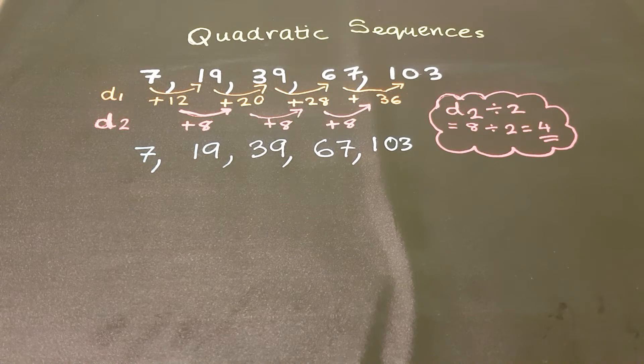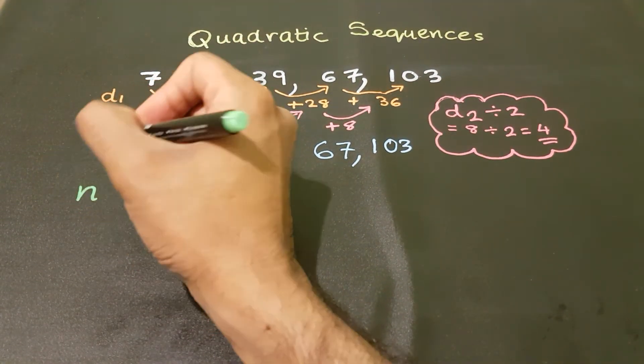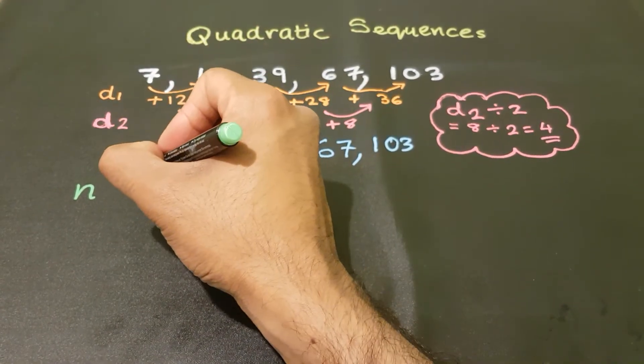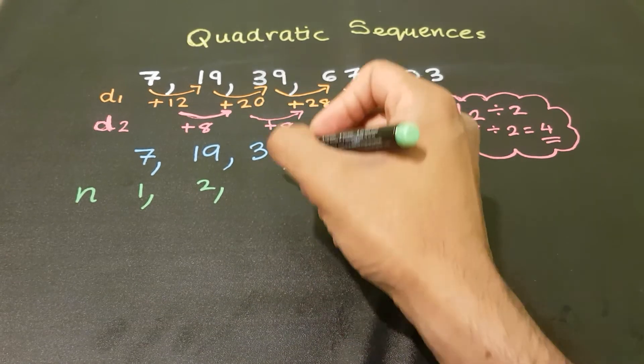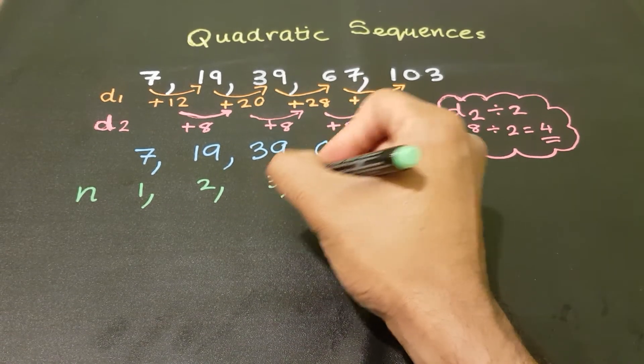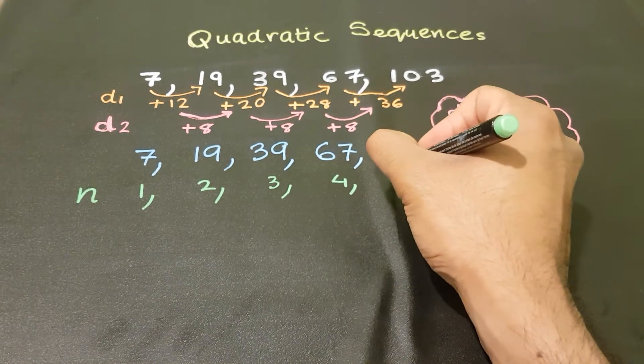Now I shall number each term. Remember from the previous video, n stands for the term number. So 7 is my first term, 19 is my second term, 39 is the third, 67 is the fourth, 103 is the fifth.